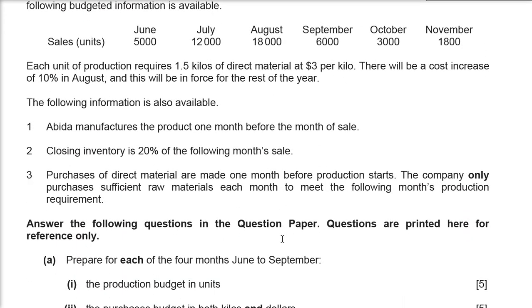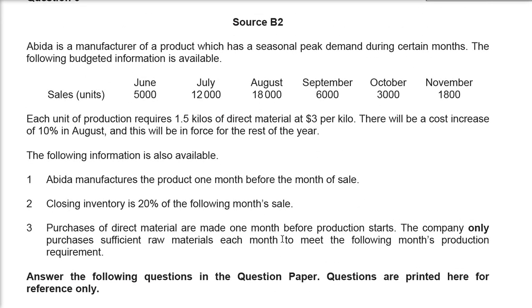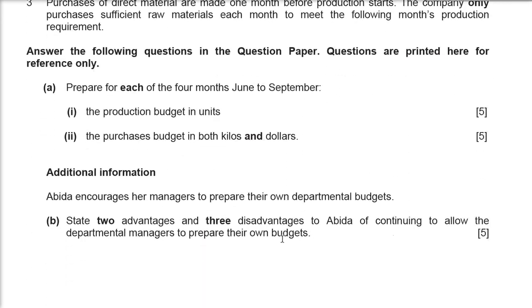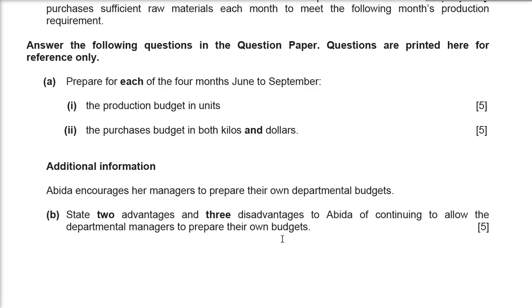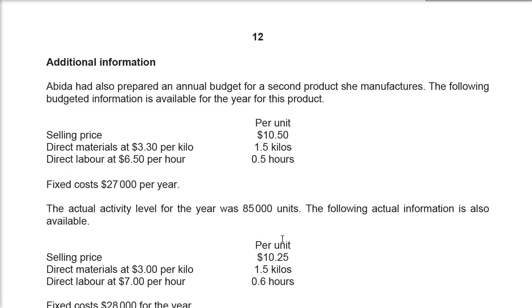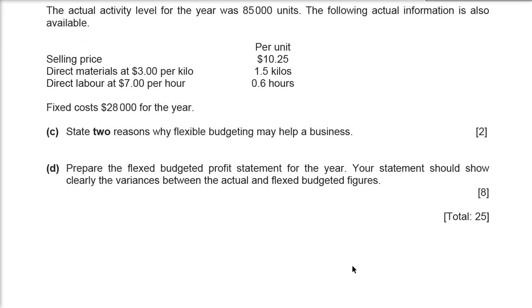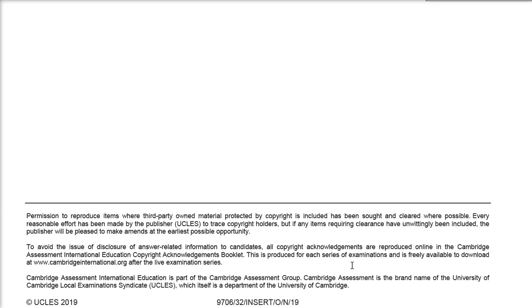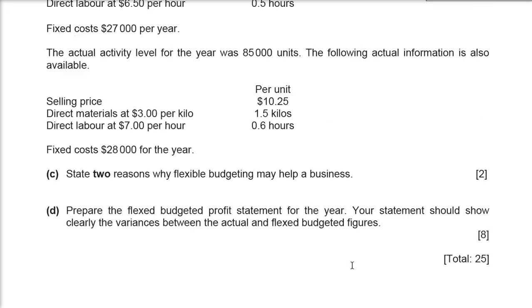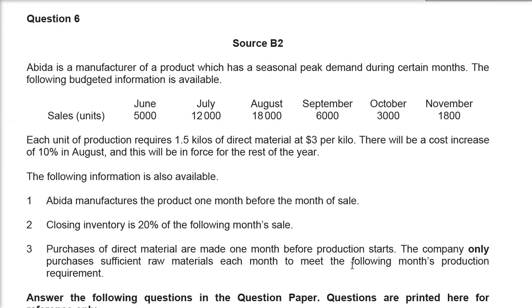Question number six is on budgeting — production budgets, purchase budgets, flex budgets, each and everything. This budgeting question is from October/November 19.